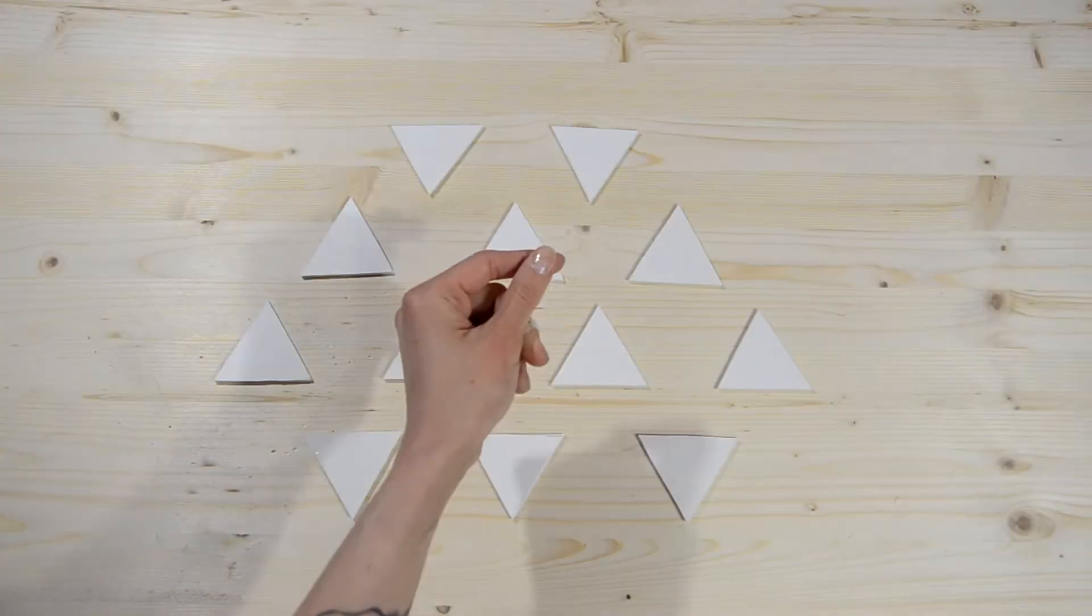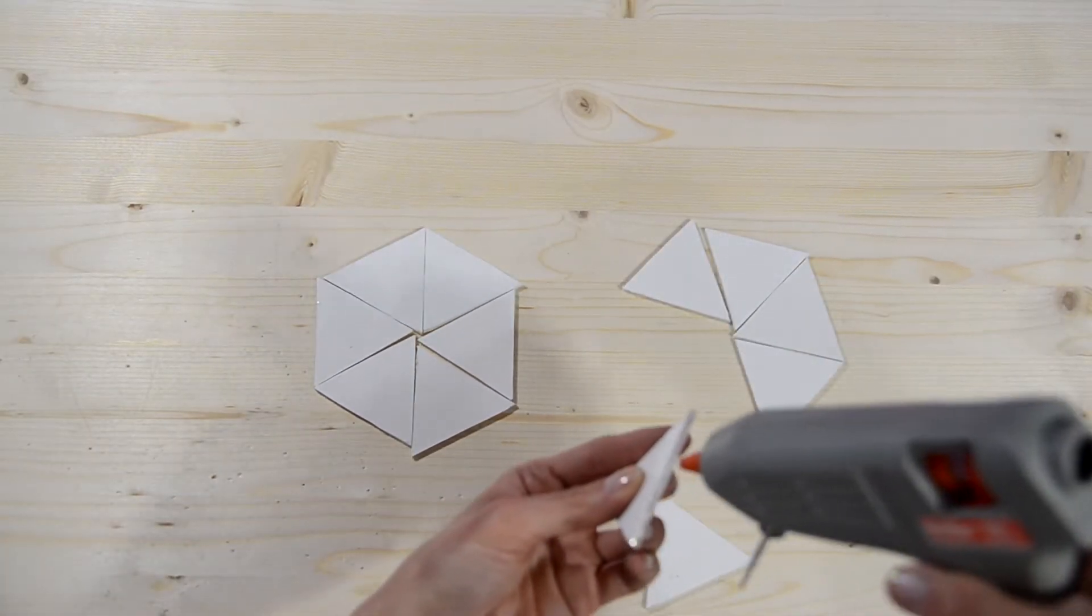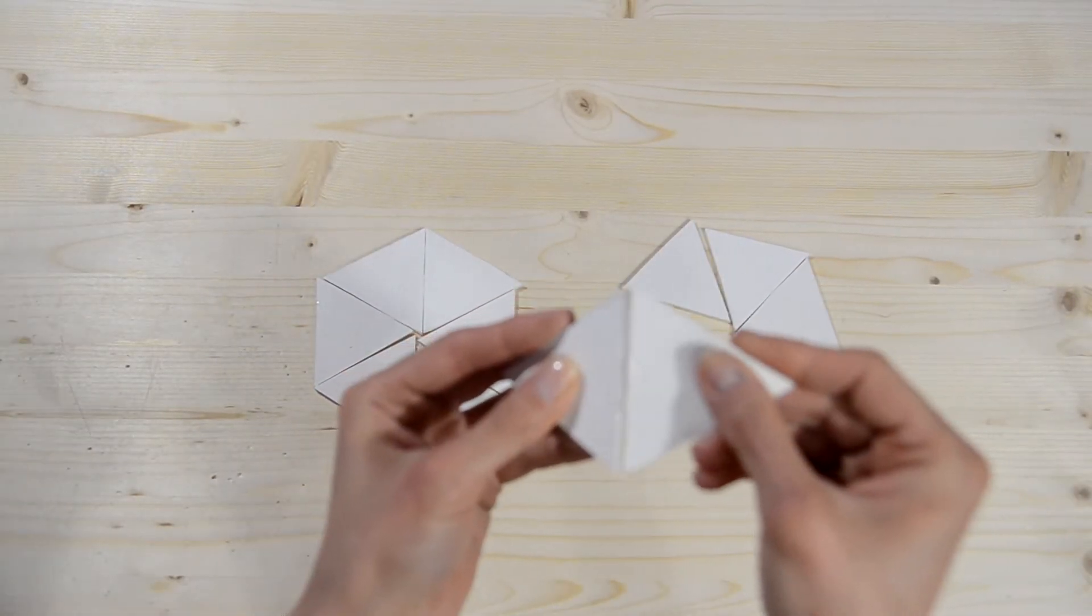Then we cut the marked shapes with a box cutter. Here's a small tip: use some underlayer while you cut it. Now we glue the ready parts with a glue gun or duct tape.